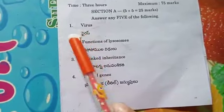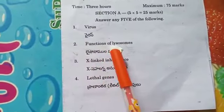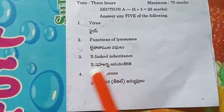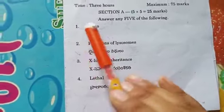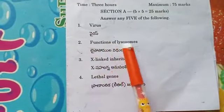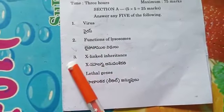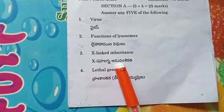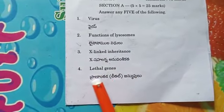First one is the virus. Second one is functions of lysosomes. Third one is X-linked inheritance. Fourth one is lethal genes.